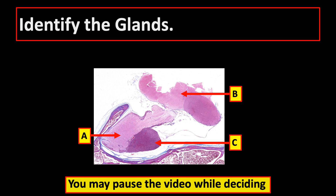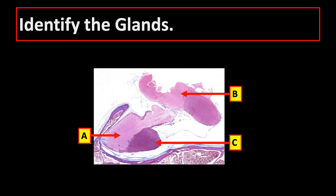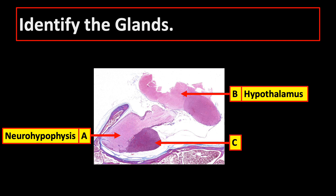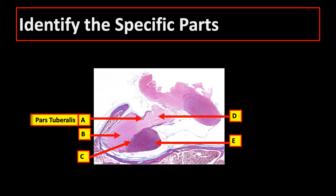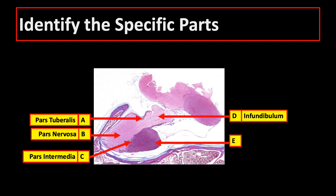Identify the endocrine glands: A is the neurohypophysis or posterior pituitary gland, B is the hypothalamus, and C is the adenohypophysis or anterior pituitary gland. For the specific parts: A is pars tuberalis, B is pars nervosa, C is pars intermedia, D is infundibulum, and E is pars distalis.